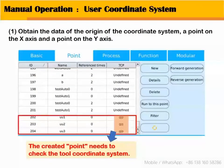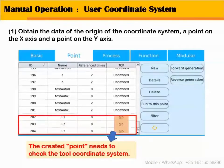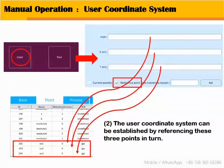As shown in each picture, we obtain the data and create three points. Please pay attention here: the created point needs to check the tool coordinate system. Then the user coordinate system can be established by referencing these three points in turn.